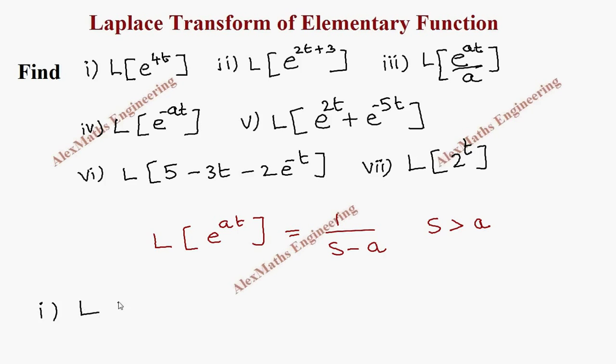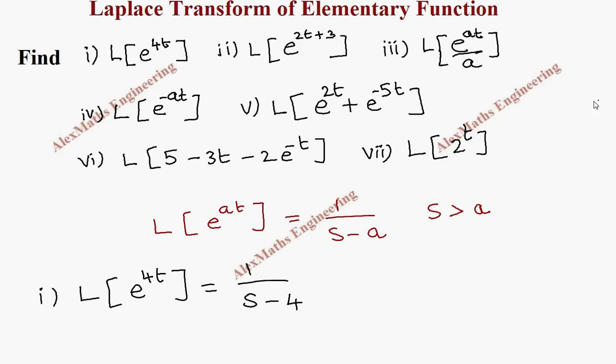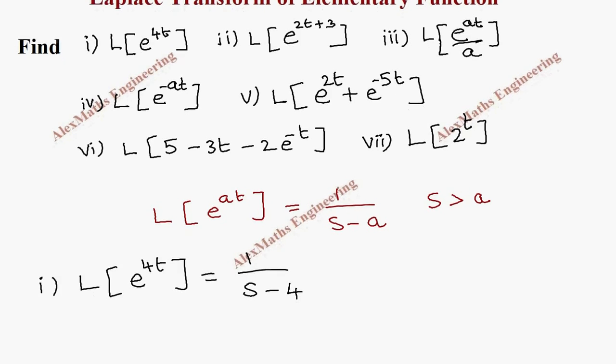Coming to the first subdivision, we have the Laplace transform of e^(4t). In place of a we have 4, so the answer is 1/(s - 4). Then the second subdivision is e^(2t + 3).